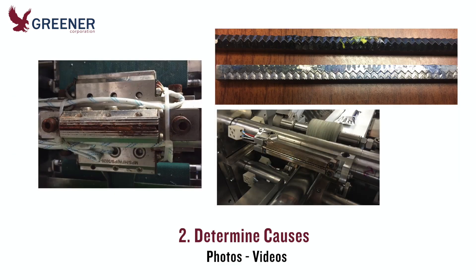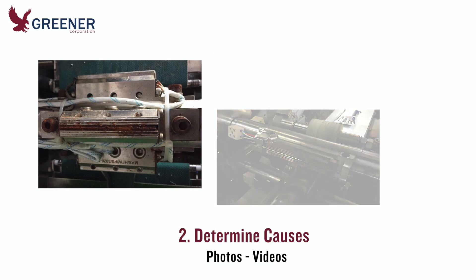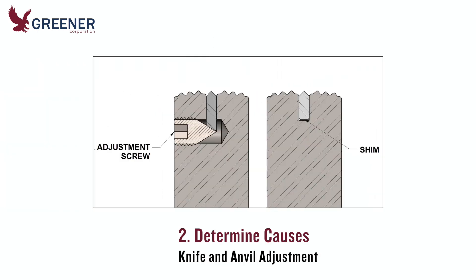Provide photos or videos of any machine processes or components that are pertinent to the problem, such as packages, crimpers, used anvils and knives, and the sealing and cutting head. Are your knives adjusted with screws or shims? If shim adjusted, what is the number and thickness of the shims under the knife and anvil?